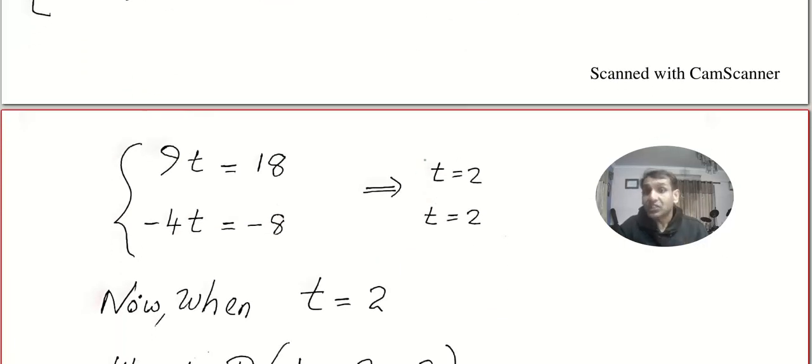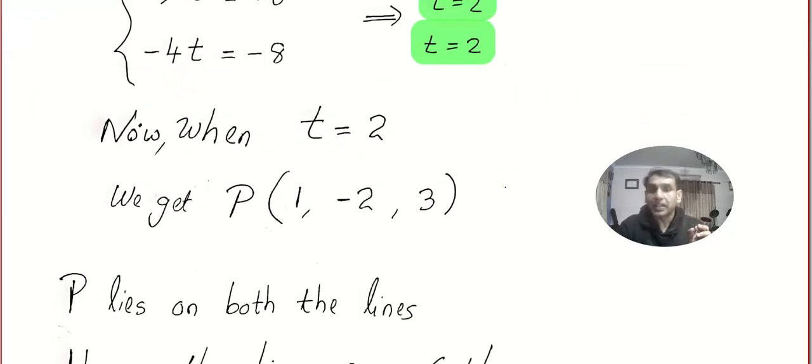In both the cases. If you get the same value - in this problem it is 2, in another problem it might be 1/2 or minus 7/6, anything - but if you get the same value, then you can understand they are coplanar. There is a common point.